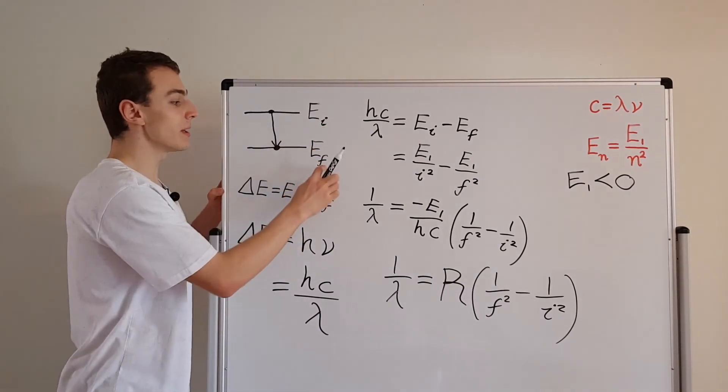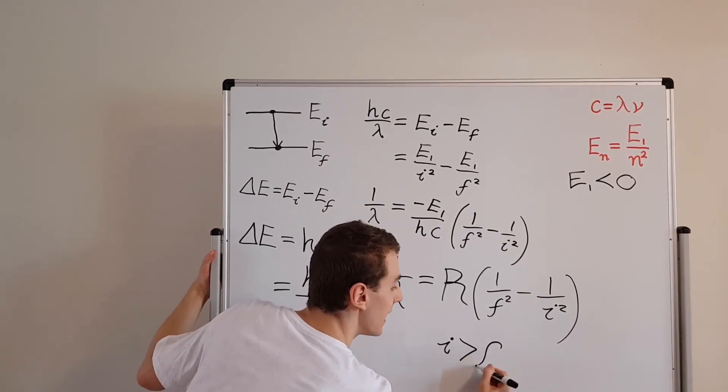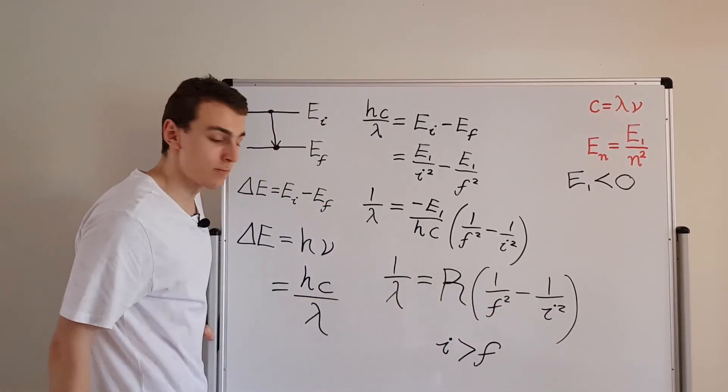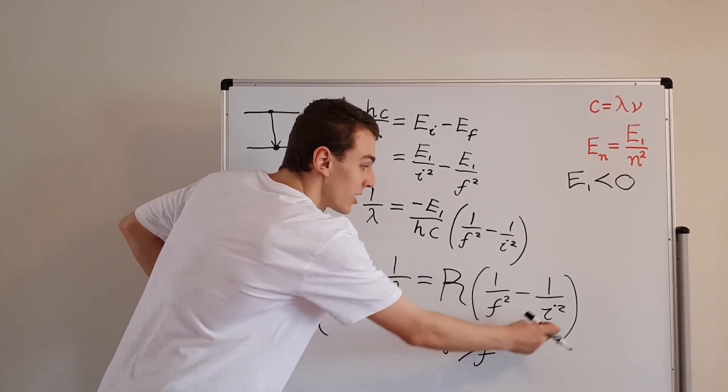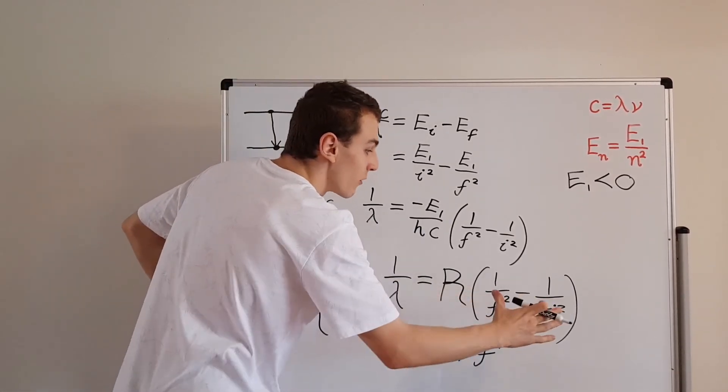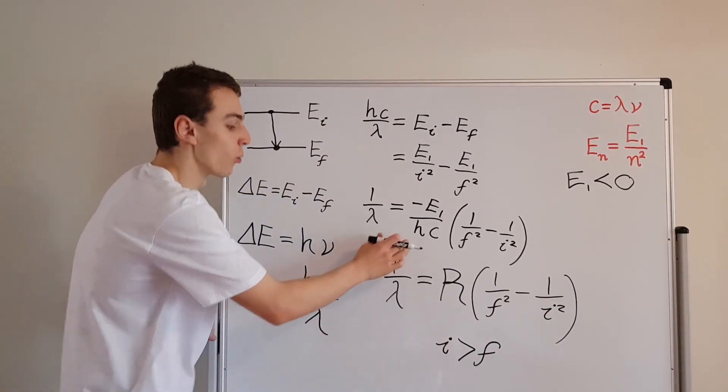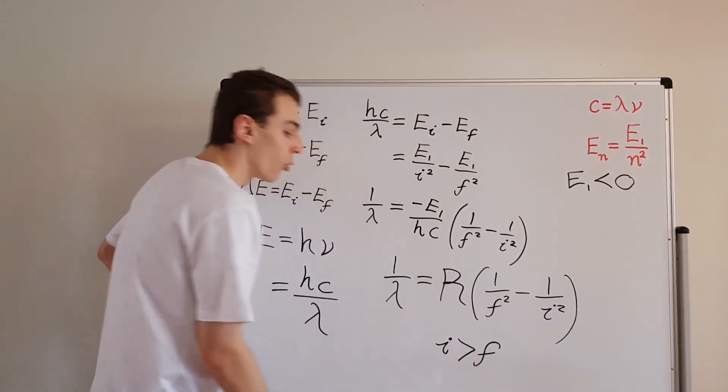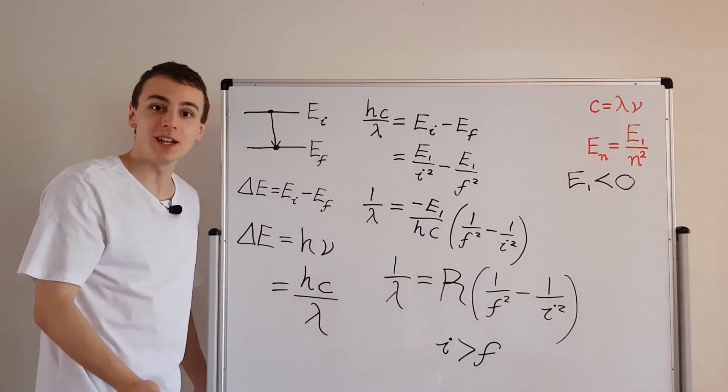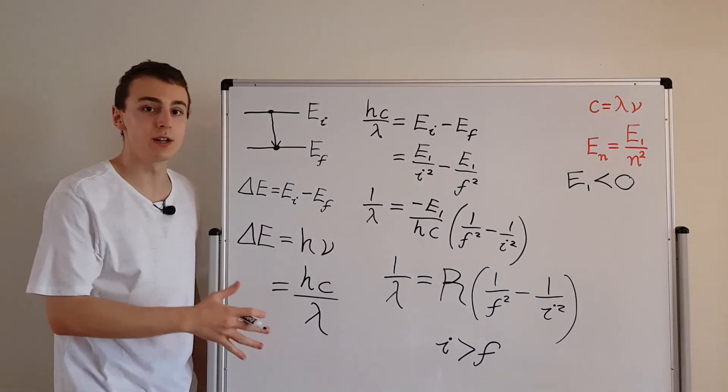In the case of emission, the initial energy level is going to be larger than the final. So what we actually know is that i is bigger than f. But if we take 1 over i squared, that's going to be smaller than 1 over f squared, because this guy's a bigger value. A bigger value in the denominator is going to make a smaller value. So we know that this minus this is going to give a positive value, and we're going to have a positive value times the Rydberg constant, and that's going to give us 1 over the wavelength. So we can actually reconstruct all of the observed wavelengths just from playing around with integers and different combinations of integers that correspond to energy levels. That is the beauty of the Rydberg formula.